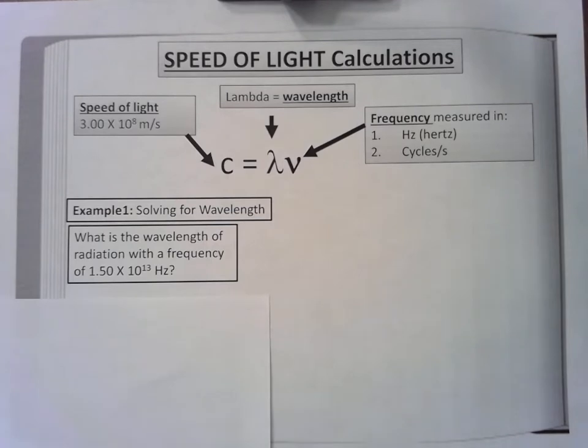Here is the formula: C equals lambda times nu, or speed of light equals wavelength times frequency. This problem is solving for wavelength. You're not usually told what you're solving for, but for review, we're going to set things up in your notebook.